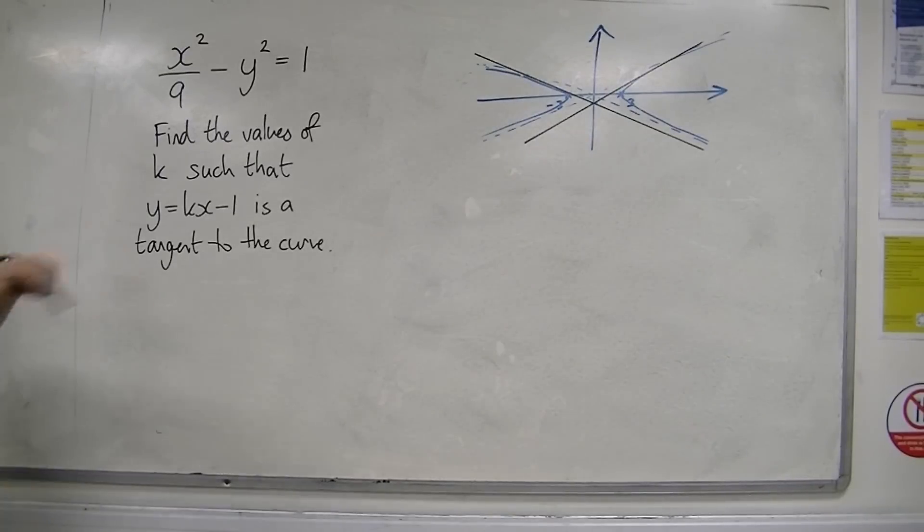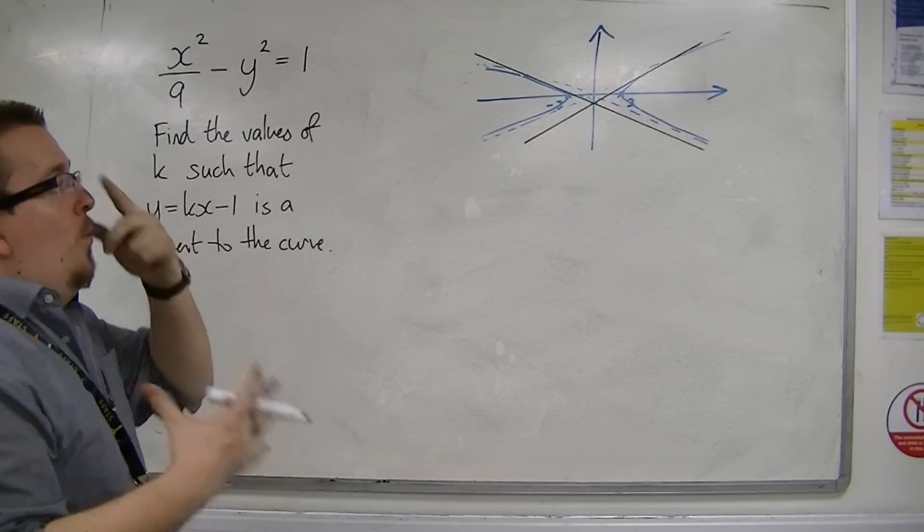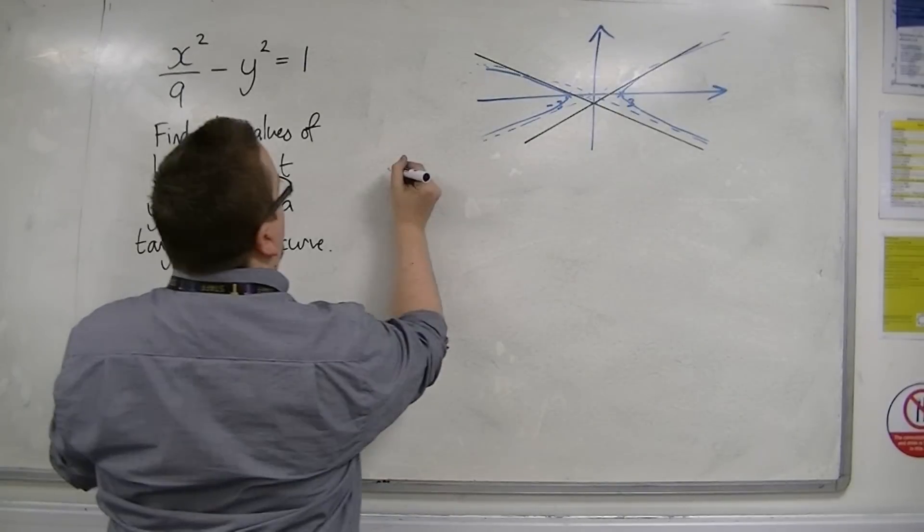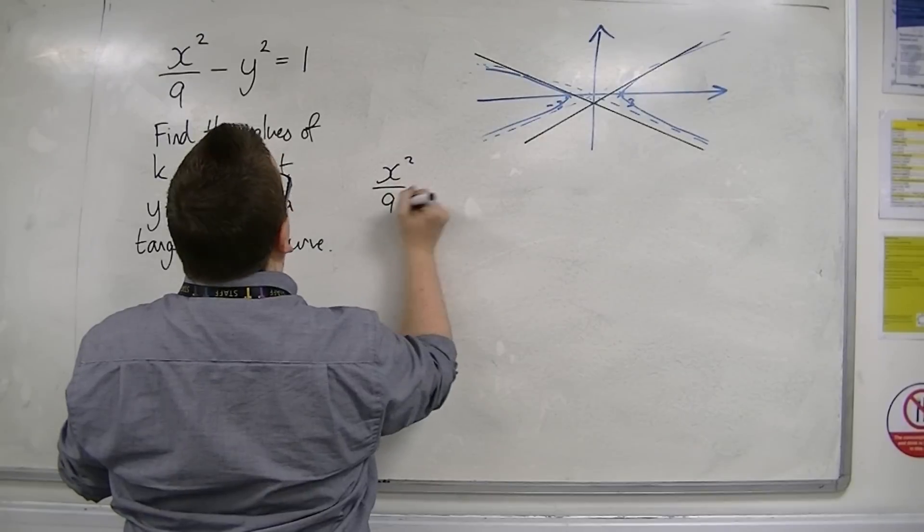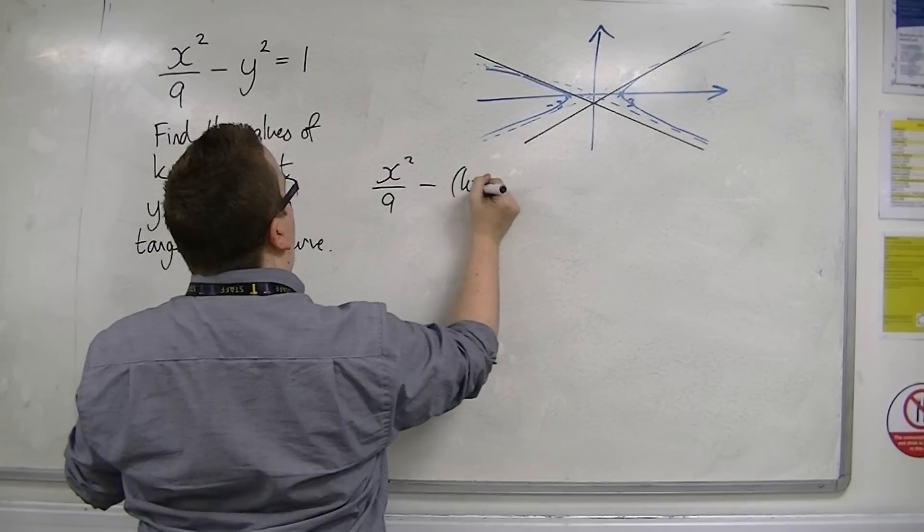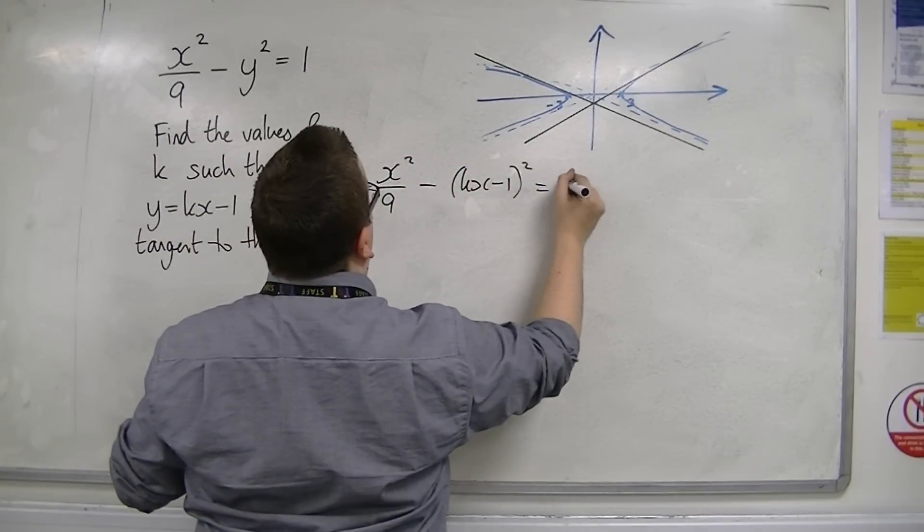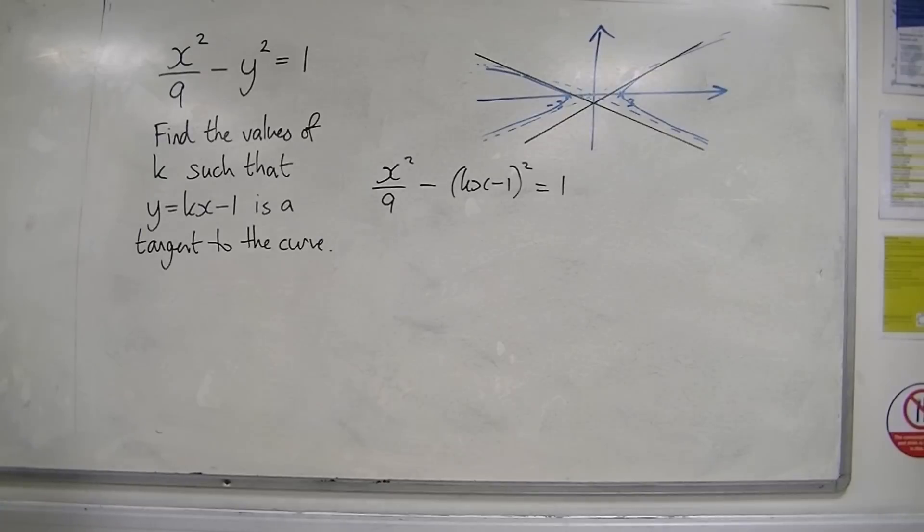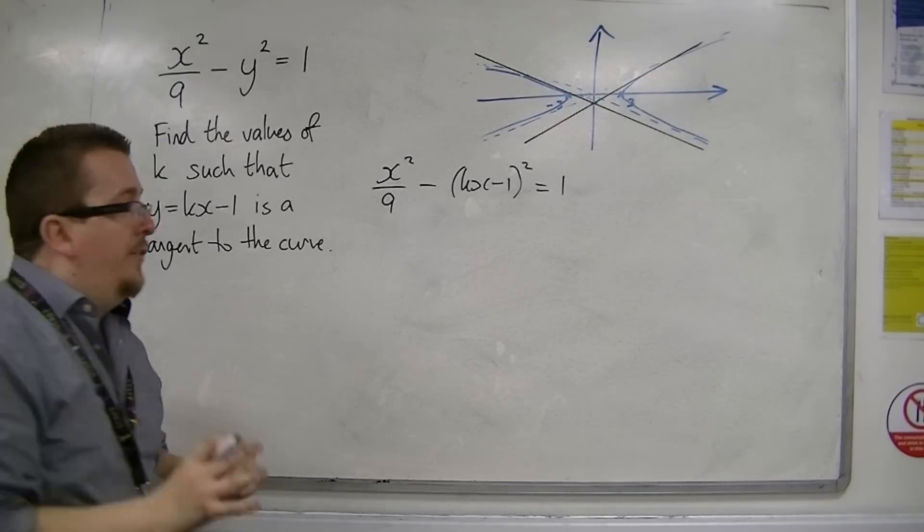So if I substitute y is equal to kx minus 1 into this equation, that's going to show where they intersect. I'm going to have x squared over 9 minus (kx minus 1) squared is equal to 1. Now, I'm going to want to expand this and simplify it.